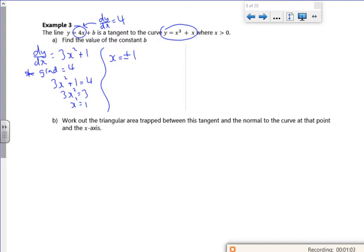But it tells us x is greater than 0. So I'm going to justify why I'm getting rid of the minus. So as x is greater than 0, x is 1. Right.